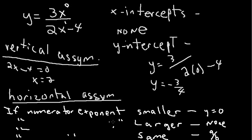If the numerator exponent was larger, then it would have none. If the numerator exponent is the same as the denominator exponent, let's say this is x to the 1 and this is x to the 1,